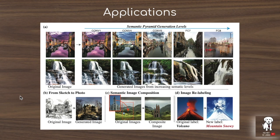In addition to being an interesting tool for visualizing what is contained in pre-trained features of image classification networks, this is also useful for image repainting — taking inputs outside the natural image distribution like sketch drawings and synthesizing a photorealistic image — as well as semantic composition, where you drop a new object into a scene and have it blended in, and image relabeling, where you take an image like a volcano and recondition it as a snowy mountain.